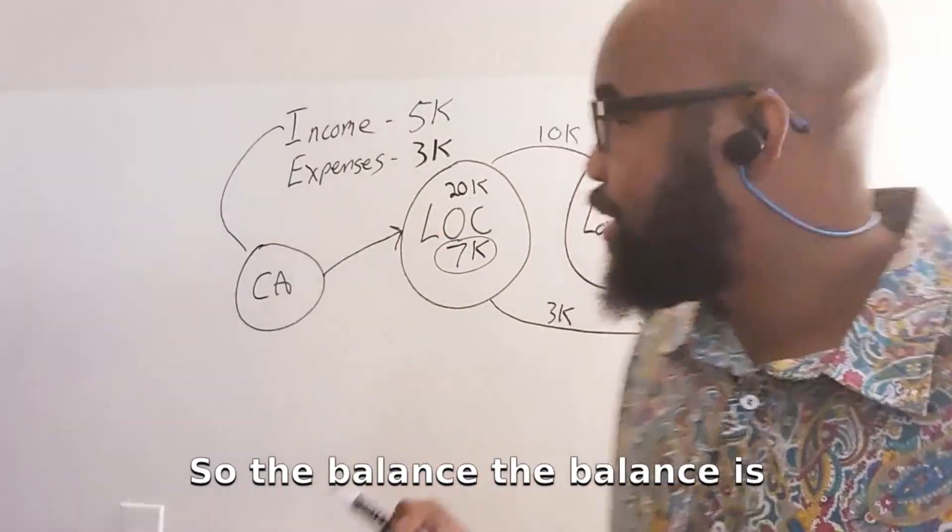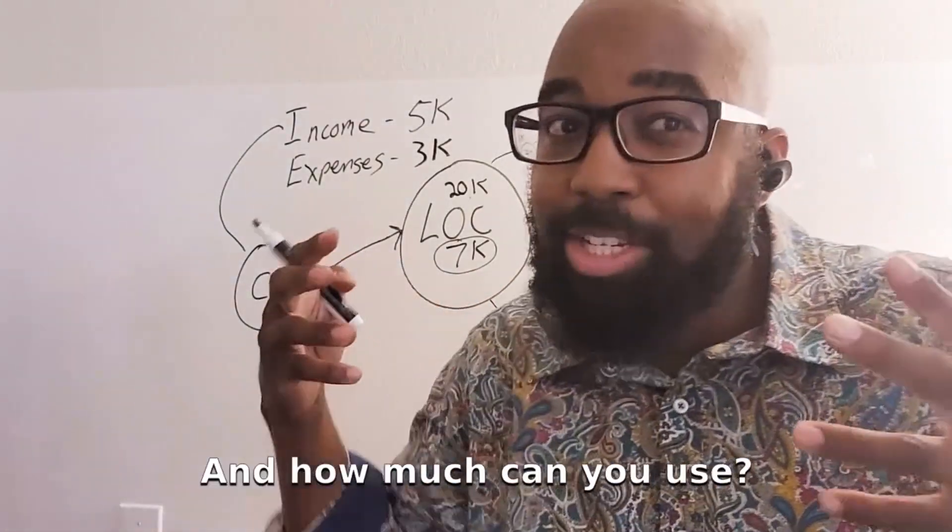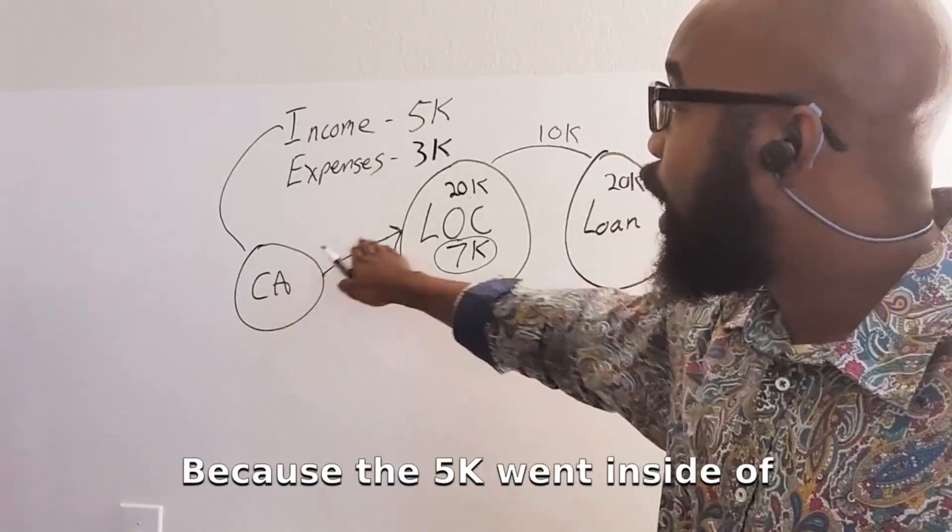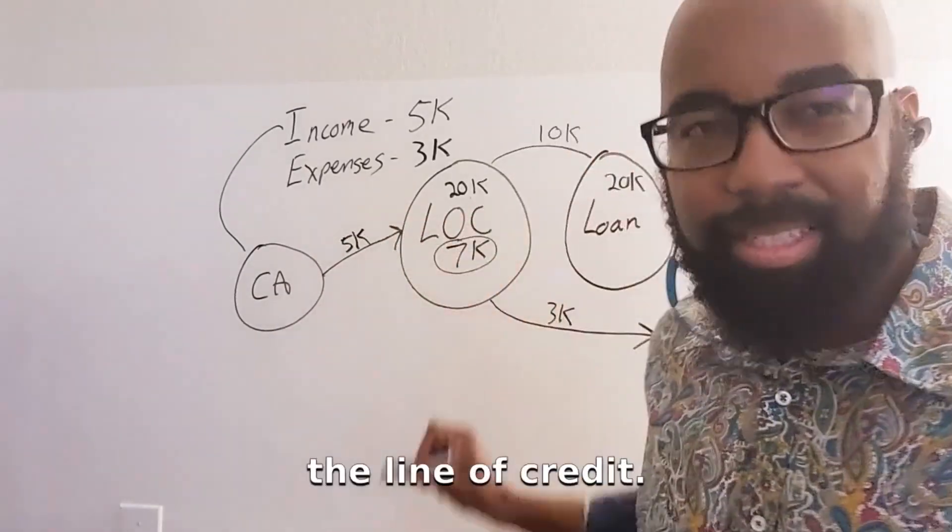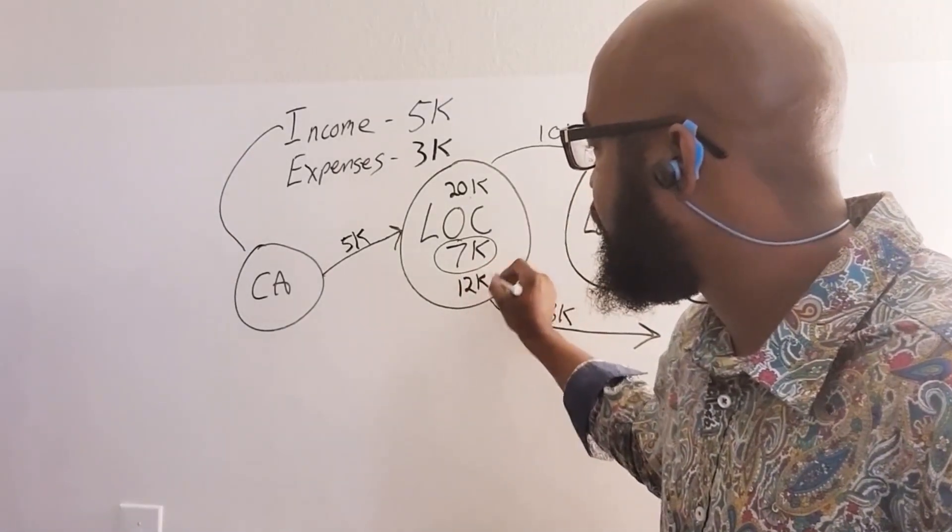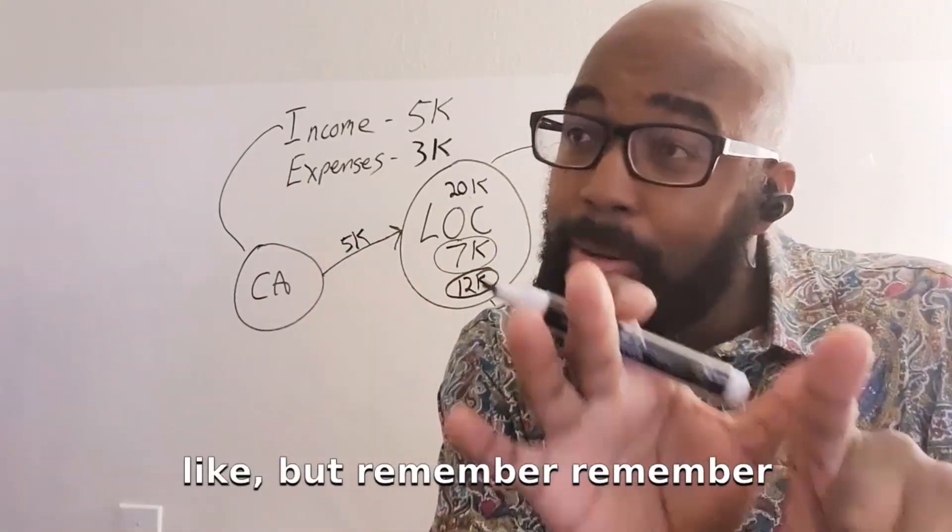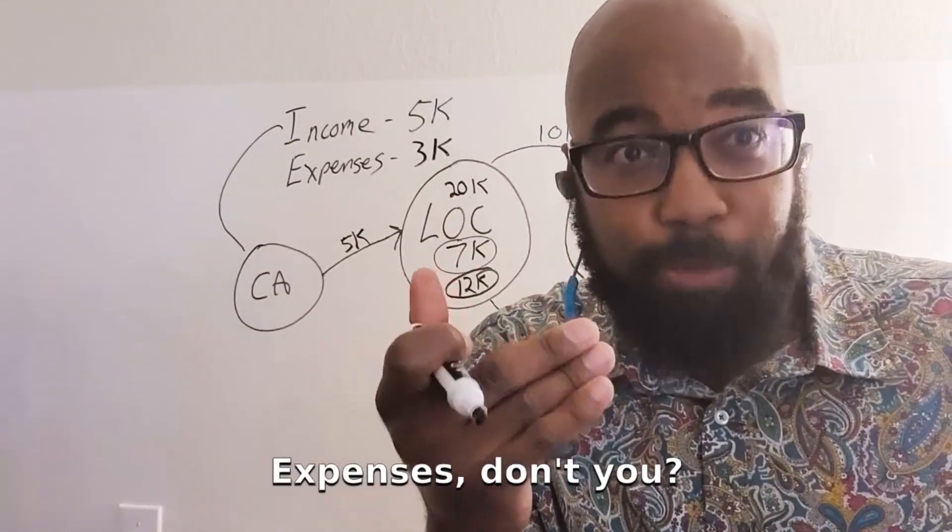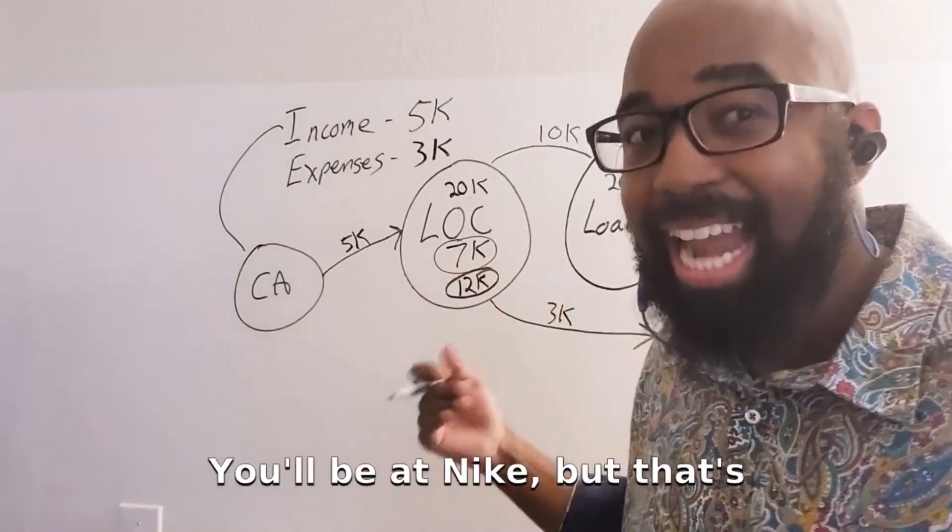So the balance is going to be, right? Now, how much can you use? You can use 12K now, right? Because the 5K went inside of the line of credit. So now it's 12K that you can use. But remember, you have the expenses, don't you? So the expenses are going to subtract. Now you'll be at 9K.